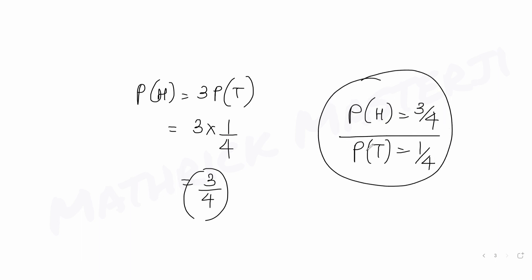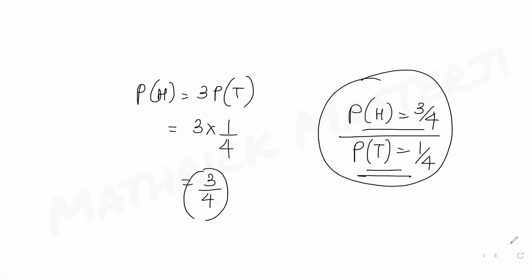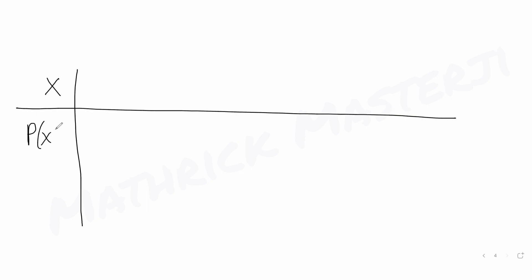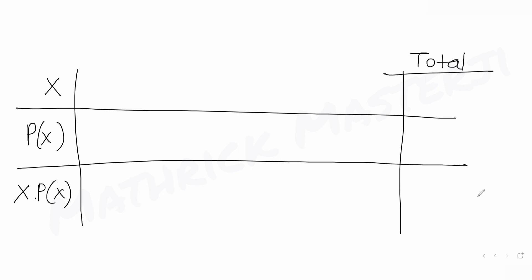Once I have probability of tails as 1 over 4, probability of heads becomes 3 times 1 over 4, which is 3 over 4. So probability of heads is 3 over 4 and probability of tails is 1 over 4. Now I can further solve the question. We need X and probability of X, and once we multiply them for all cases and find the total, that gives us the mean value of X.